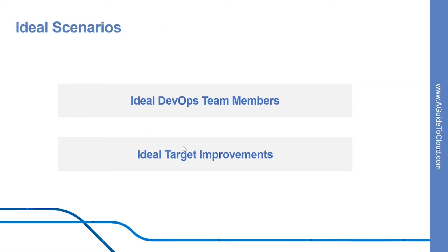For a successful DevOps transformation, the aim is to find team members with the following characteristics: they already think they are in need of change, they have previously shown an ability to innovate, they are already well respected within the organization, they have a broad knowledge of the organization and how it operates, and ideally, they already believe that DevOps practices are what is needed.